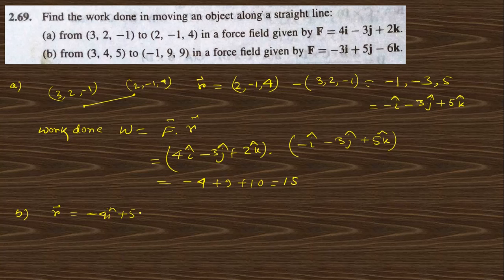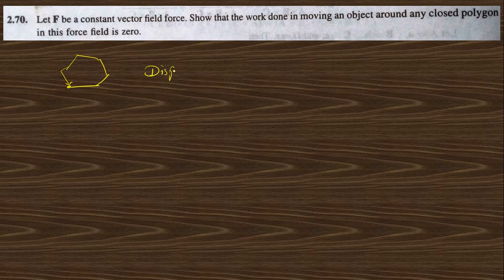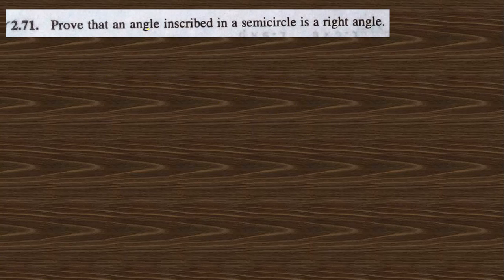For part b, the displacement r vector is minus 4i-cap plus 5j-cap plus 4k-cap, and computing F dot r gives 13. For the next question, let F be a constant force field; the work done moving an object around a closed path is zero because the displacement vector r is zero, so work done equals F dot r equals zero.